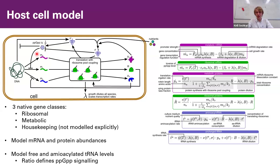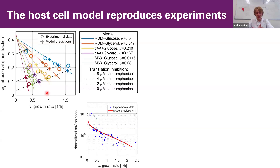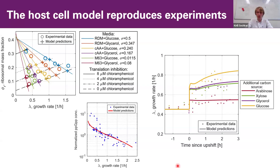Because the ppGpp signaling enabling regulation of cell growth is dependent on the ratio between free and amino-acylated tRNA levels, we also model these variables. In the end, we get a model that quite reliably reproduces growth phenomena observed experimentally. These trends with increasing nutrition of the medium and increasing antibiotic concentration are maintained by our model. We can also see that the levels of the ppGpp signaling molecule are captured quite well. Beyond steady-state predictions, we can also have quite realistic dynamic predictions — for example, for the nutrient upshift dynamics experienced by bacterial cells when new sources of nutrition are added to the medium.